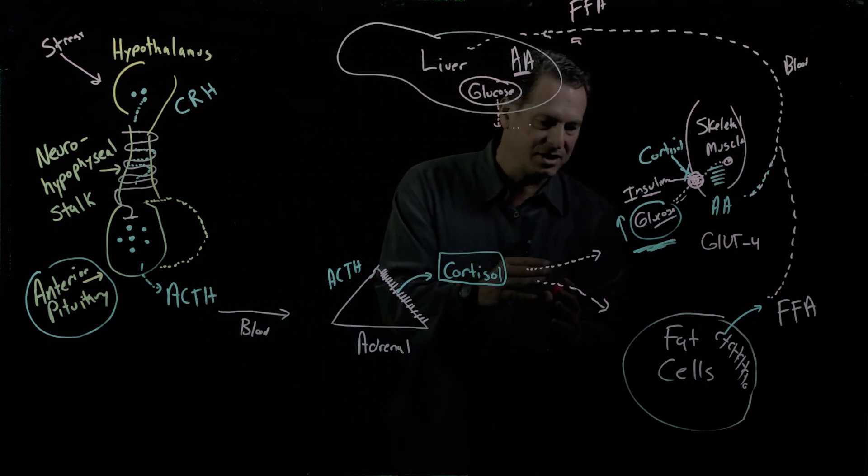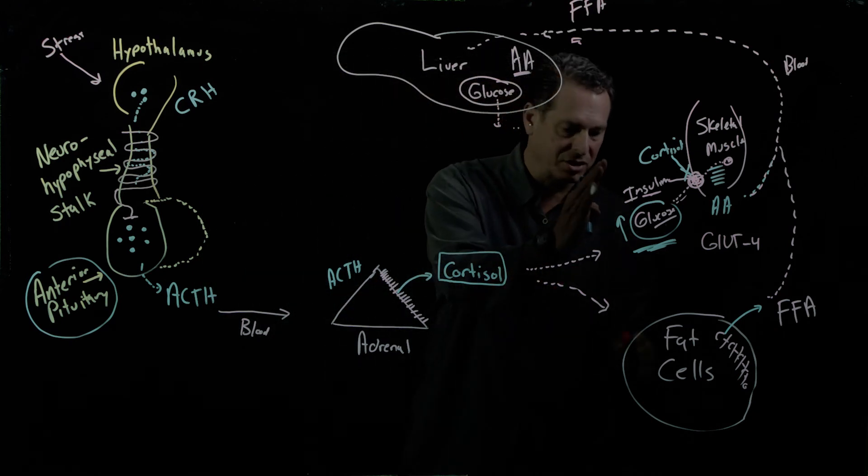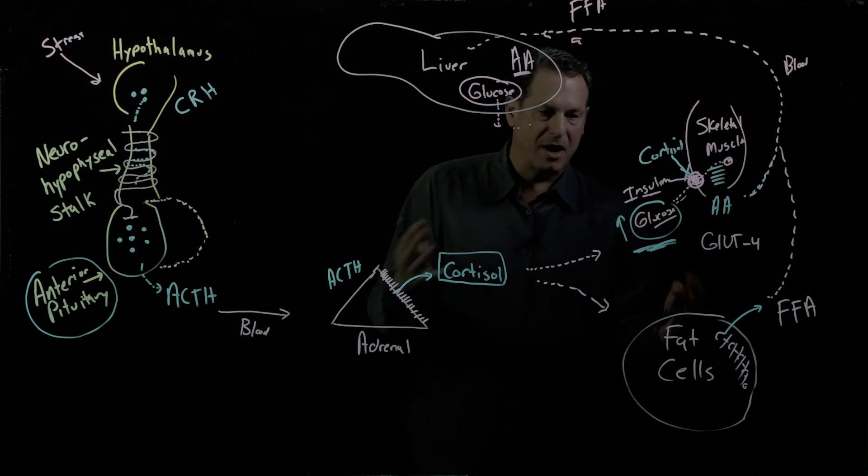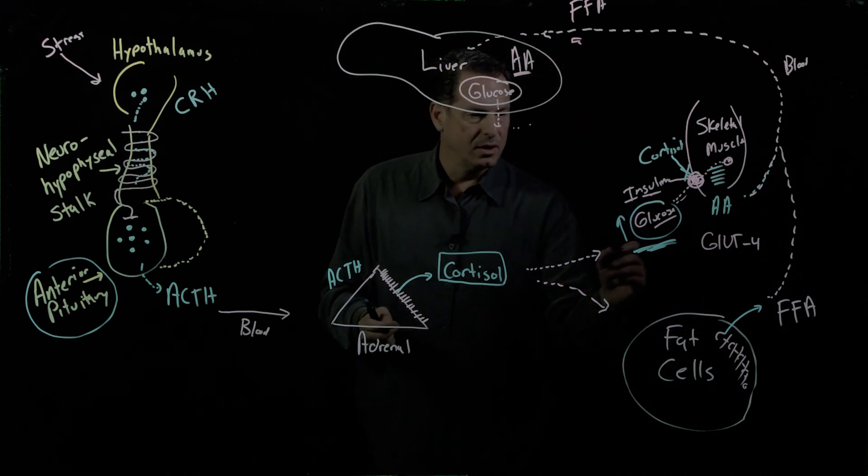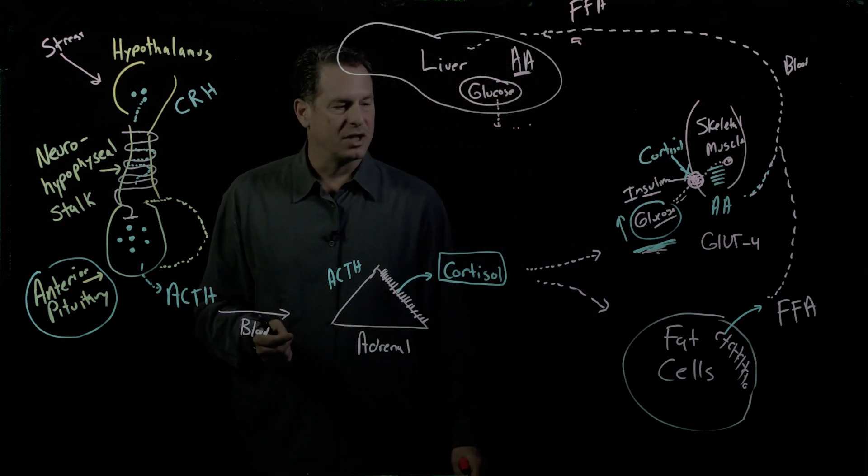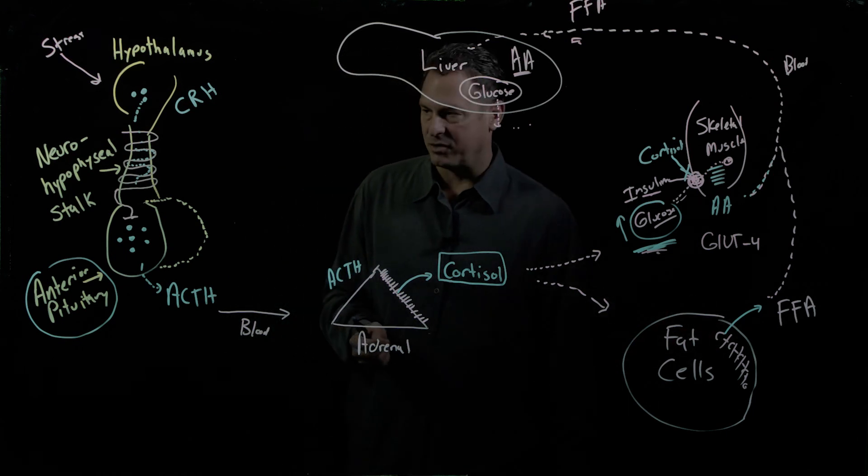Cortisol has actions in muscle, in fat, and in liver. And these are huge metabolic effects, resulting in increased blood glucose levels and increased free fatty acid levels.